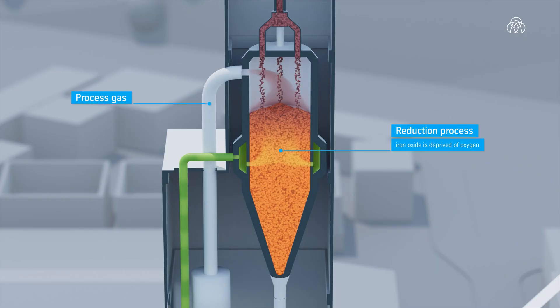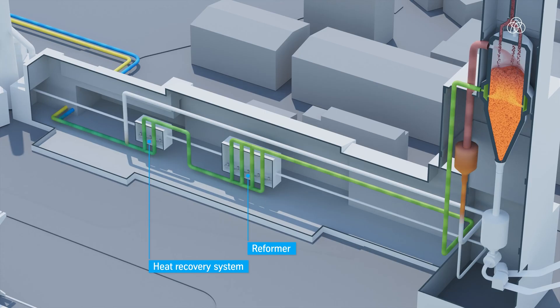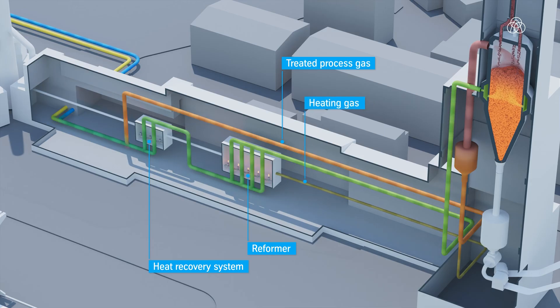The process gases produced during reduction are fed back into the gas cycle for treatment. The process gas is divided into two gas streams, treated process gas and heating gas. While the heating gas feeds the burners to preheat the gas streams and generate the heat required for the reformer, the process gas is mixed back into the untreated natural gas and hydrogen.